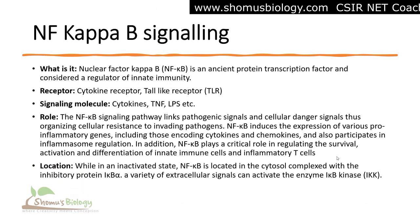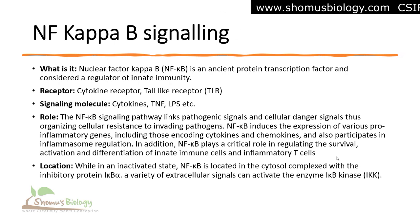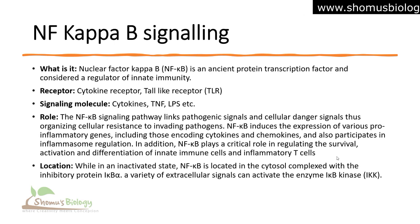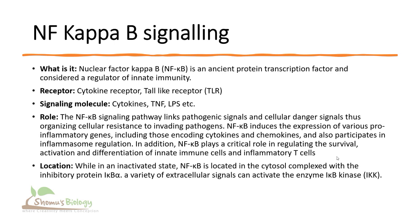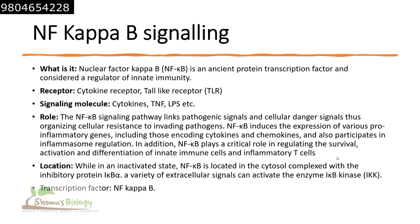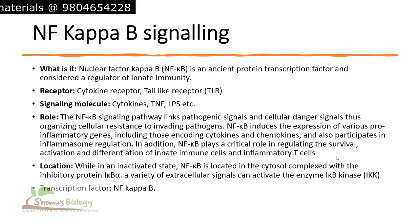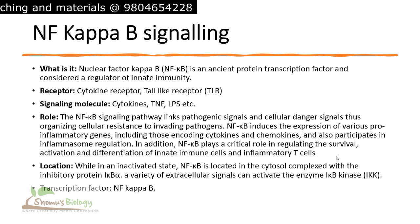Regarding the location of NF-kappa-B signaling: in its inactive state, it is located in the cytosol, complexed with the inhibitory protein inhibitor of kappa-B alpha, or IκB alpha. A variety of extracellular signals can activate the enzyme IκB kinase (IKK), which triggers NF-kappa-B signaling. The final transcription factor used in this pathway is nuclear factor kappa-B itself — that's why we call it NF-kappa-B signaling.